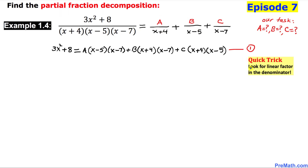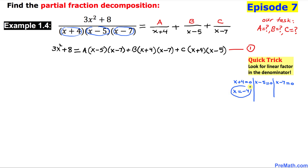Now let's look at a quick trick: look for the linear factors in the denominator and set each one equal to zero. We have x plus 4, x minus 5, and x minus 7. Setting each equal to zero gives us x equals negative 4, x equals positive 5, and x equals positive 7.